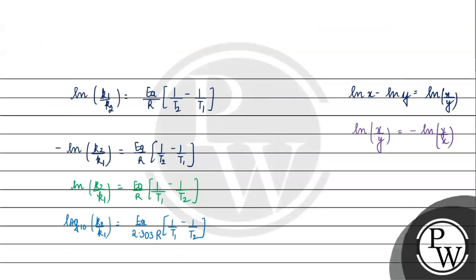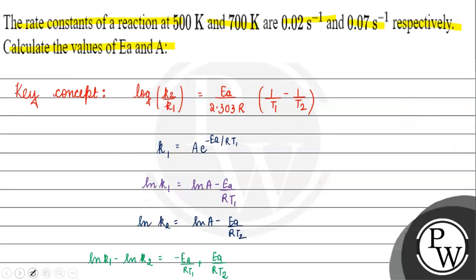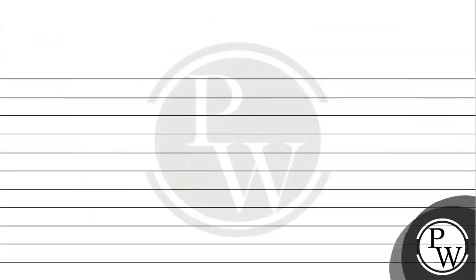Now, we have K2 value given as 0.07 per second and K1 as 0.02 per second. We have T1 as 500 kelvin and T2 as 700 kelvin. Let's put the values.